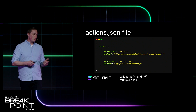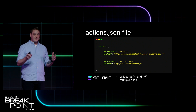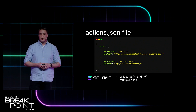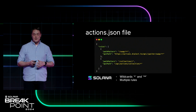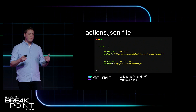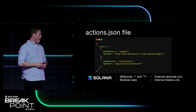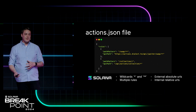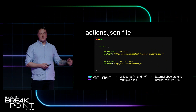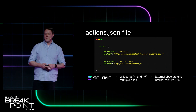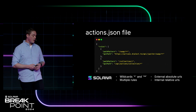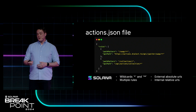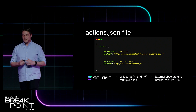You can do full wildcards — either single star or double star, they have different behaviors. You can do multiple rules, so in this example we have two different URL patterns that can be rendered. You can also do external URLs — go to a completely separate domain that you control, or maybe a service like Dialect has actions you can use out of the box. Or you can do internal URLs. It's really flexible and really easy.